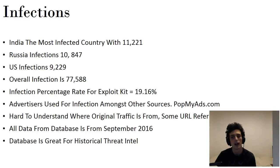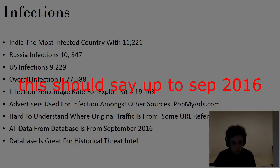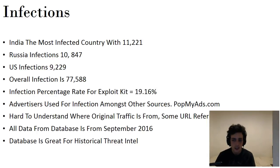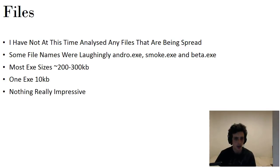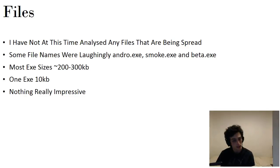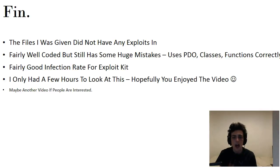All data in the database is from September 2016, so it's fairly old — but great for historical threat intelligence since you get every hit from every IP. The files being spread included things called andro, Smoke Loader — who's using Smoke Loader in 2016/17? — and what appeared to be a bot, probably a cracked version from hack forums. Most executable sizes were 200–300 kilobytes, which is pretty poor. One looked fairly professional at around 10 kilobytes. Overall a small operation.